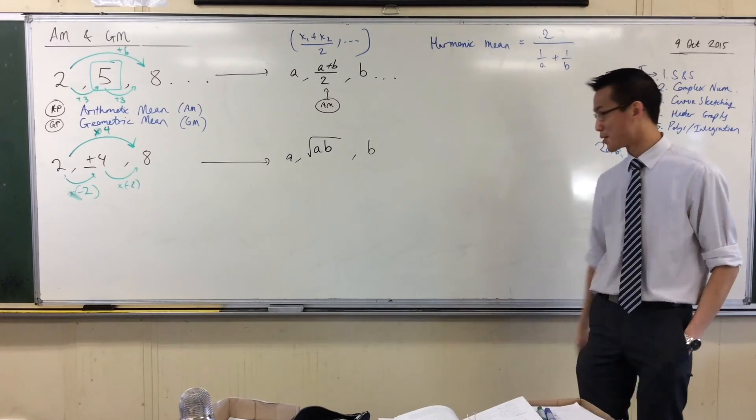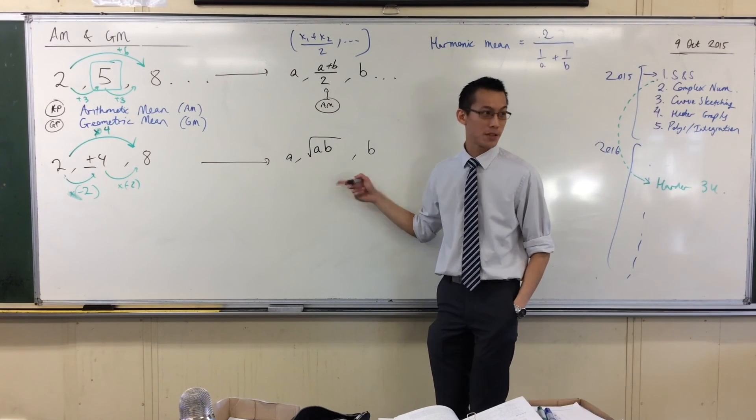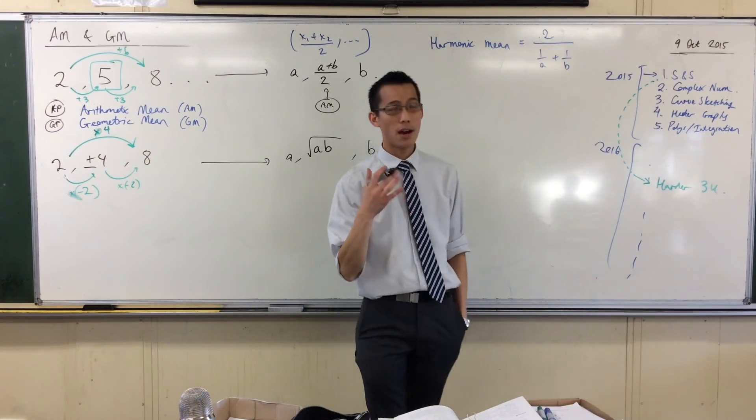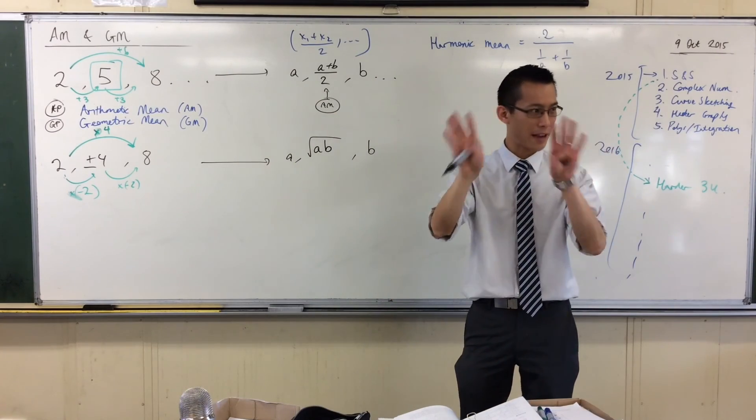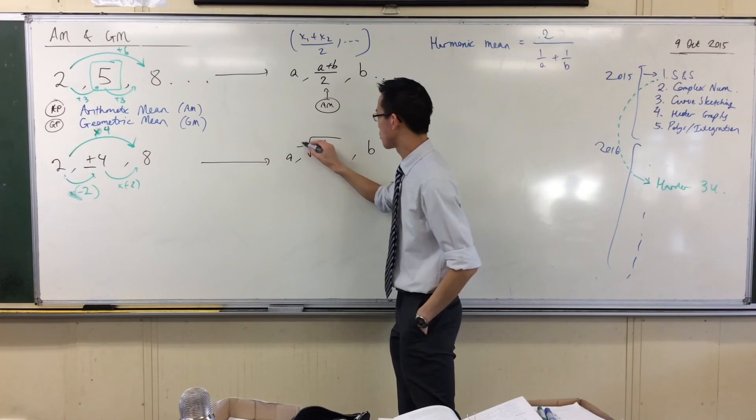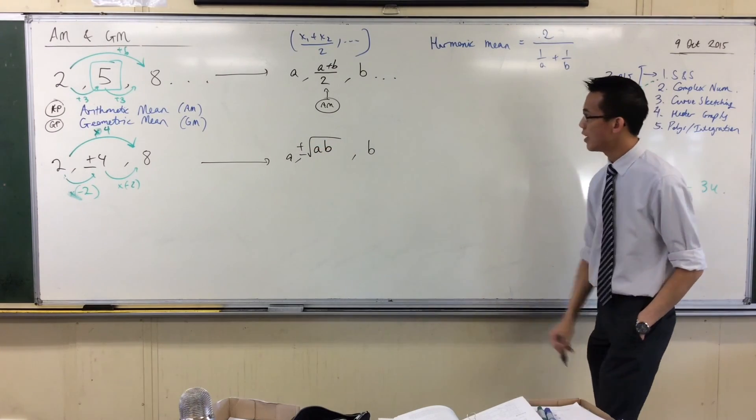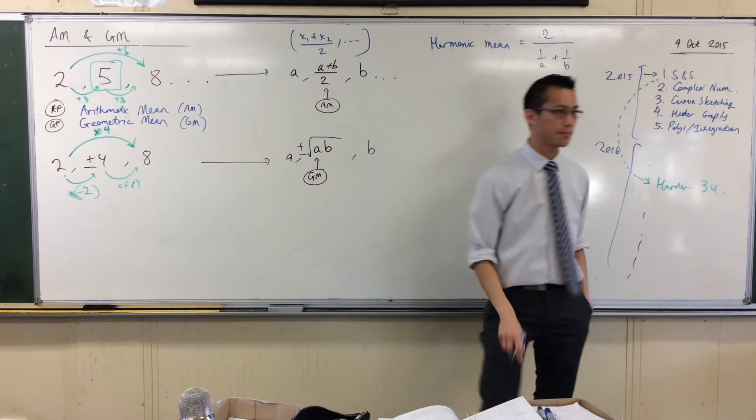Now as we have noticed, thank you Brendan, this is not the only option for the GM. You can get the plus or minus. We saw in our first lesson on GPs that you can get that alternating thing. Remember that? Black, green, black, green, black, green. So I can do plus or minus in here, and they're both fine. This is our formula for the GM.